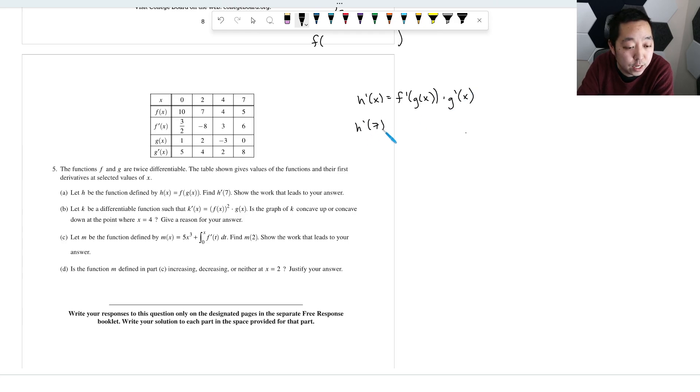So then we're just going to plug in 7 now. That's going to be f prime of g of 7 times g prime of 7. Okay, that's f prime of what is g of 7? 7, here's g, that's 0. What is g prime at 7? g prime is 8.